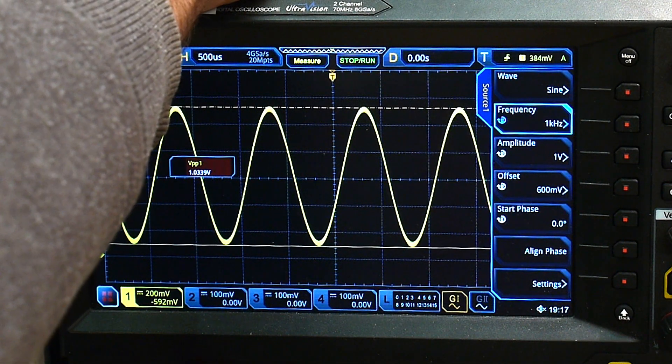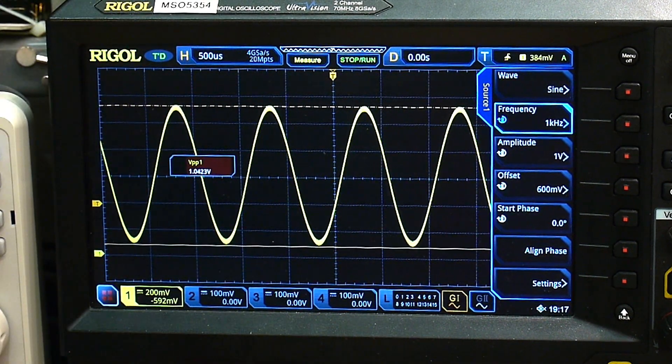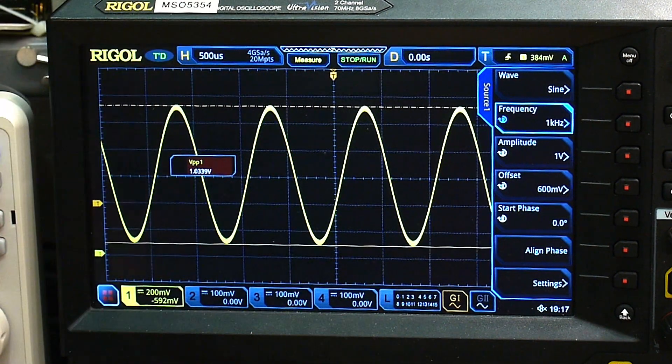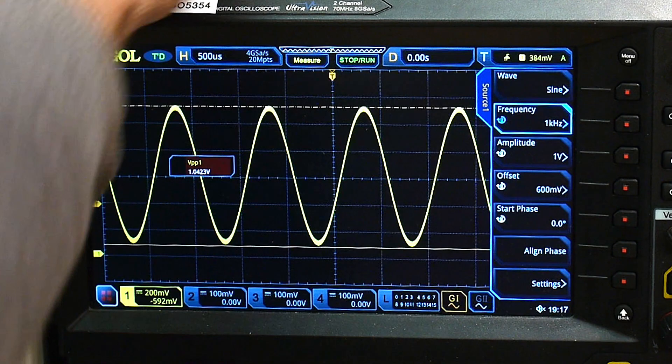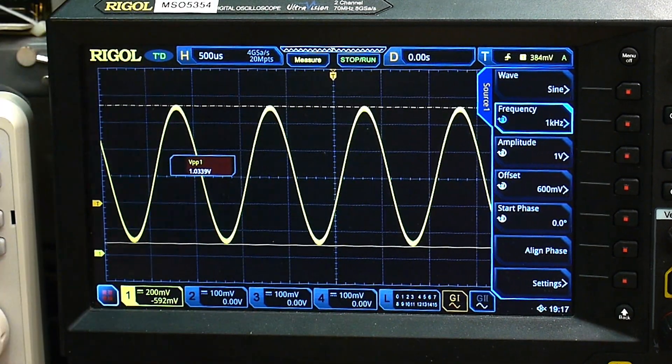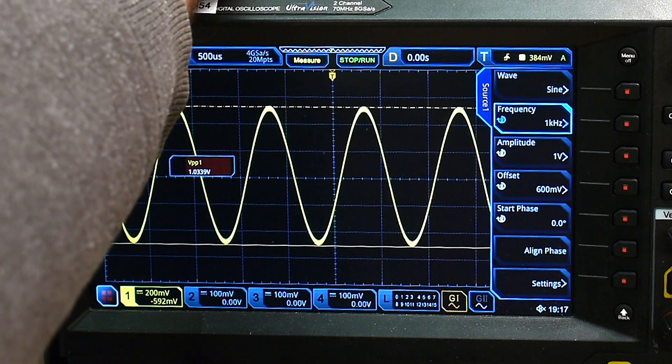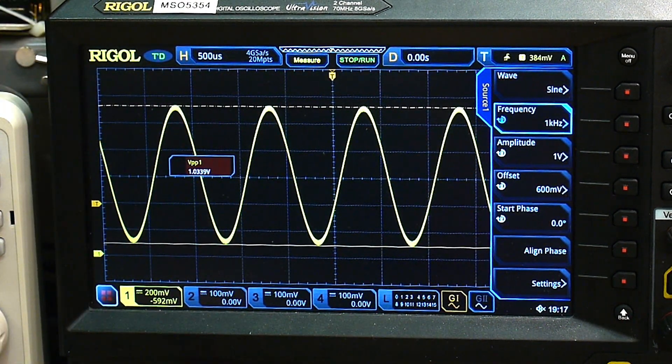Let's take it down here. 2.3 volts looks the same. 2.08 looks the same. 1.85 looks the same.